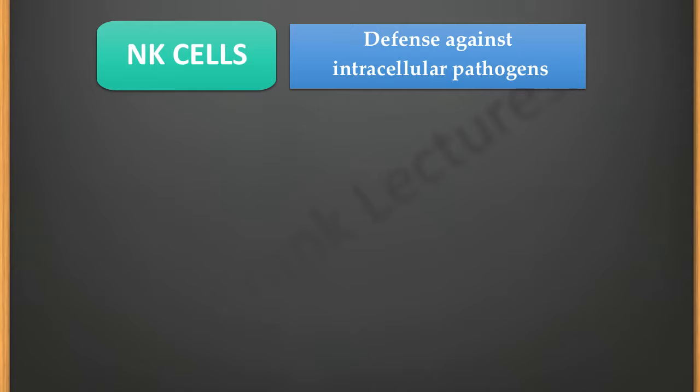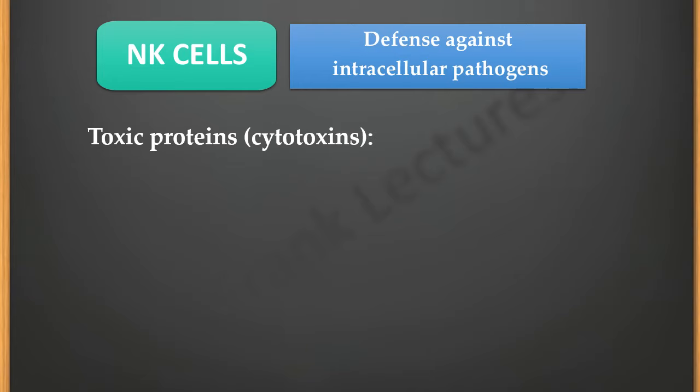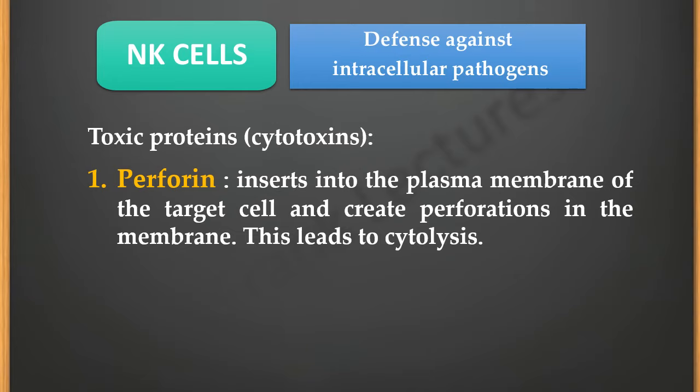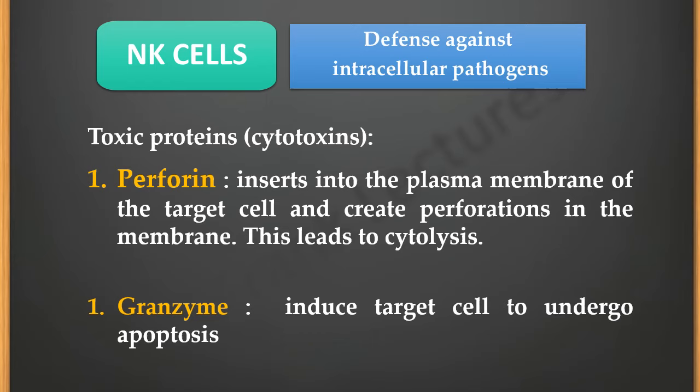These granules contain biologically potent molecules, most of which are toxic proteins also known as cytotoxins. One example is perforin — perforin inserts into the plasma membrane of the target cell and creates perforations in the membrane, resulting in lysis of the cell, or cytolysis. Another important toxic protein is granzyme, which induces the target cell to undergo apoptosis.